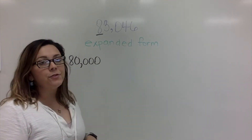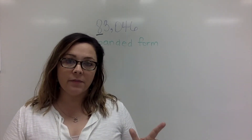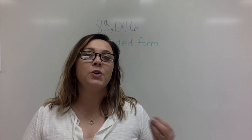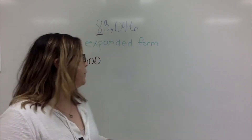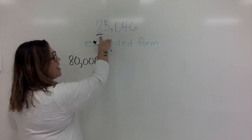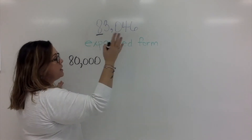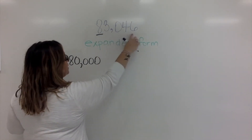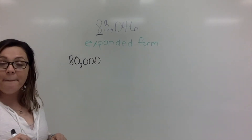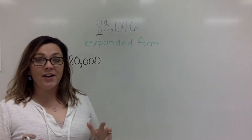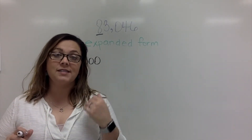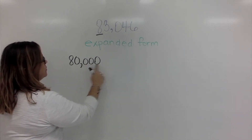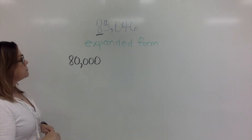As a little tip: if you count how many digits come after that digit in your number, that will tell you how many zeros you need in that value. For example, after the 8 in my number there are one, two, three, four digits — that means the value of that 8 has four zeros after it: one, two, three, four.